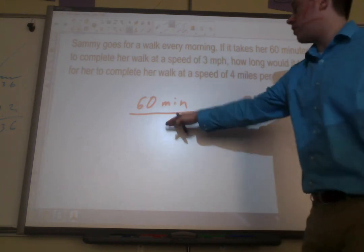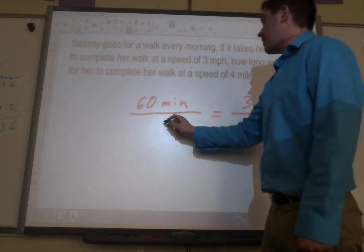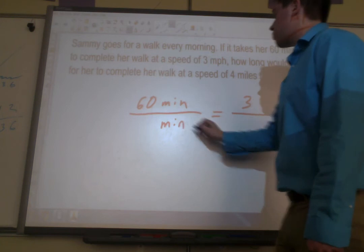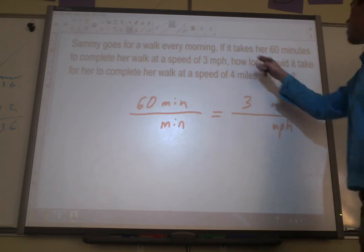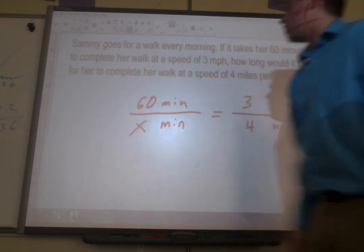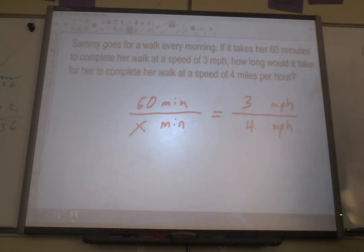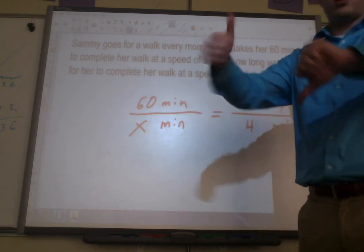Remember, we don't want to put the 3 here because then we'd have minutes with miles per hour. That can get confusing for us. So we want to keep minutes with minutes. We want to put miles per hour with miles per hour. Okay. And then it says, how long would it take for her to complete a walk at a speed of 4 miles per hour? So there it is. 4 miles per hour. How many minutes? We don't know. And that's what our proportion looks like at first. Now we ask ourselves, is it direct or indirect?